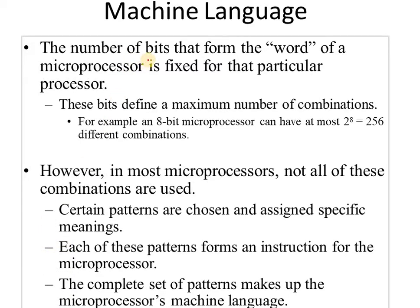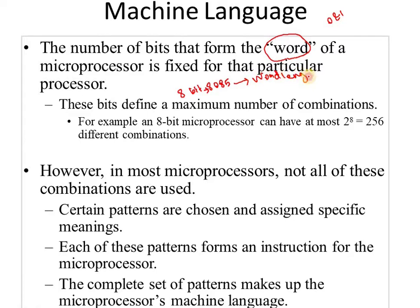Machine language is the combination of binary numbers — zeros and ones. The number of bits that form the word of a microprocessor is fixed for that particular processor. For example, the 8085 is an 8-bit microprocessor, so the word length for the 8085 microprocessor is 8 bits.